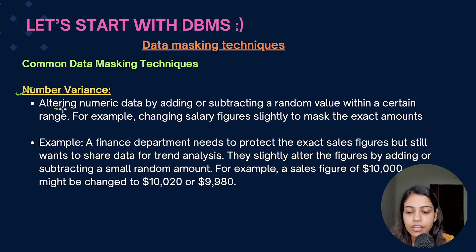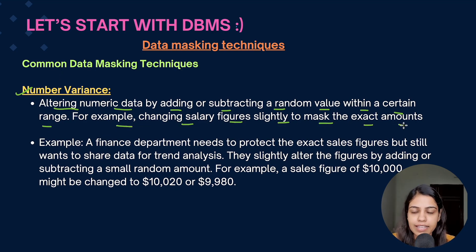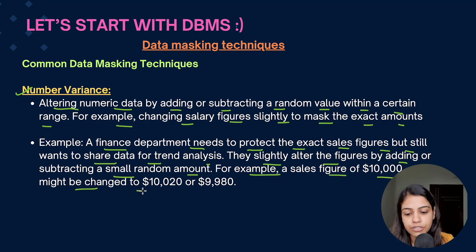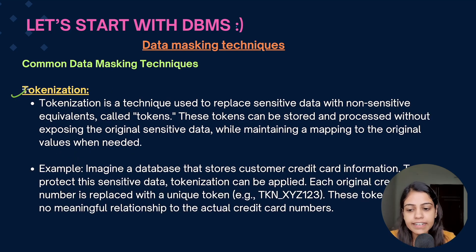The fifth technique is number variance: altering numeric data by adding or subtracting a random value within a certain range. For example, a finance department wanting to protect exact sales figures but still share data for trend analysis might slightly alter figures — a sales figure of $10,000 might become $10,020 or $9,980 — allowing trend analysis while masking the exact amounts.